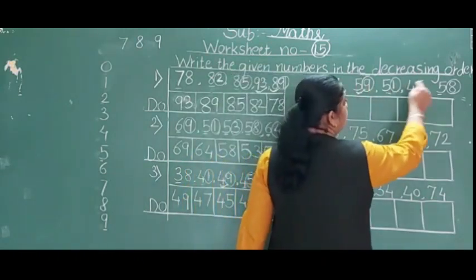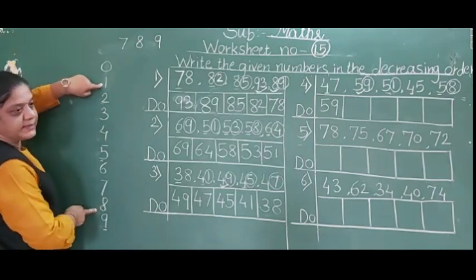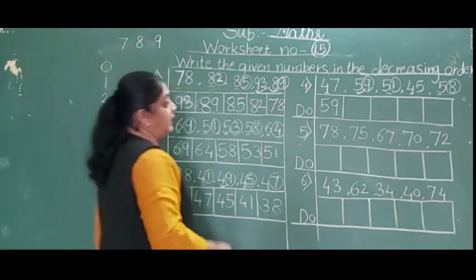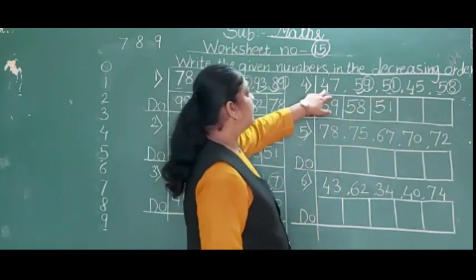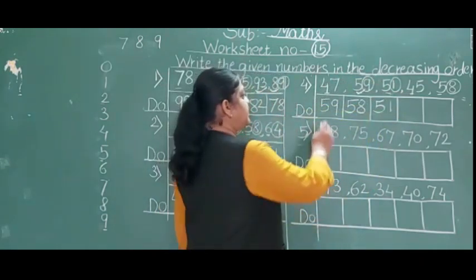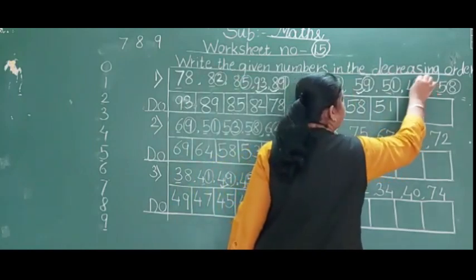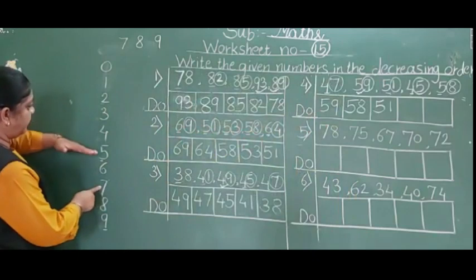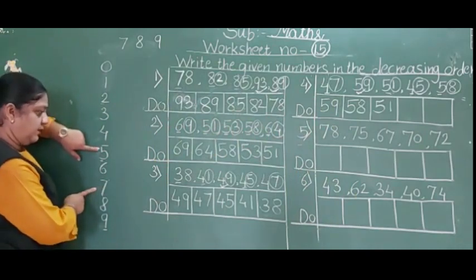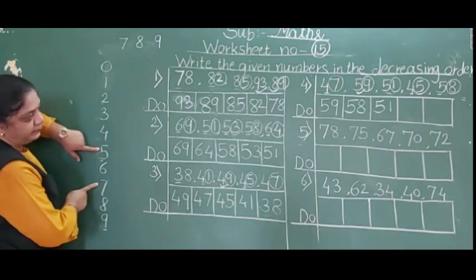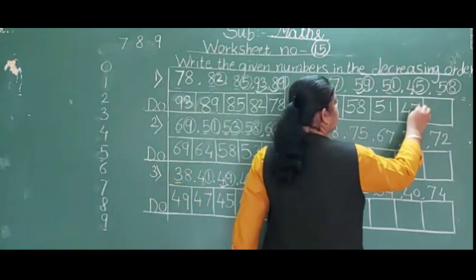59 completed. Remaining: 1 or 8. 1 is above and 8 is below. Below numbers are big, so 58 comes next, then 51. Now for the 4-group: 47 and 44. Second digits 7 and 5 — 5 is above (small) and 7 is below (big). So 47 comes before 44. Last is 44.